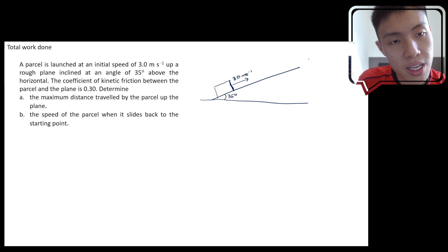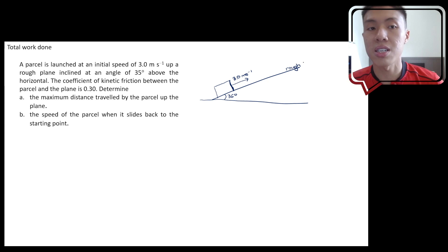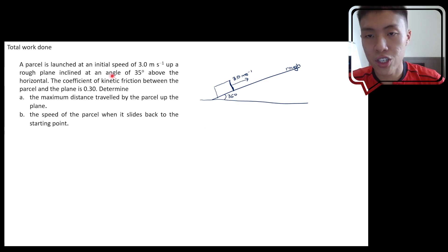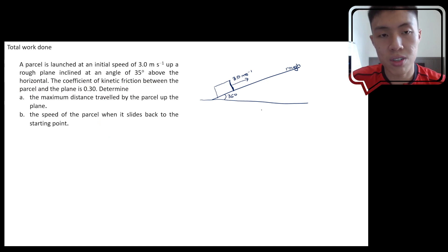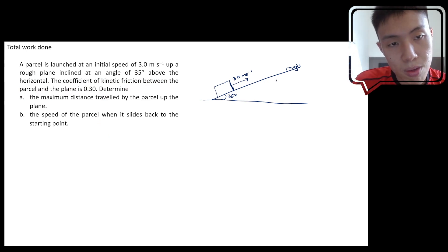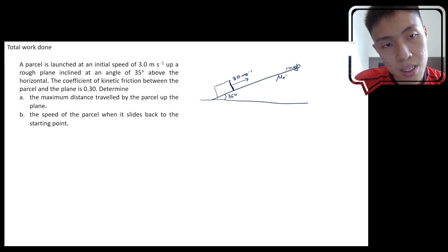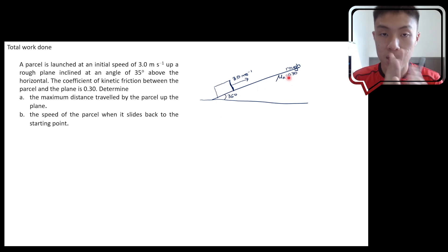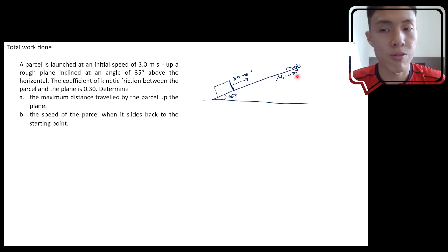This plane is rough, which is important because that means there will be friction. The coefficient of kinetic friction between the parcel and the plane is 0.30, so μk equals 0.30. This coefficient is shared between the parcel and this surface.